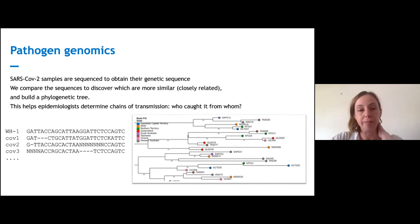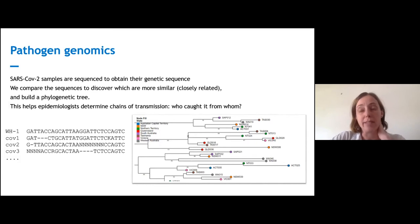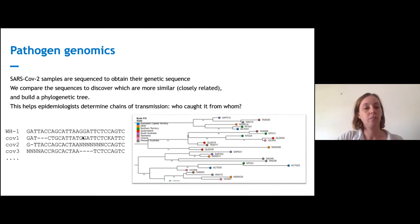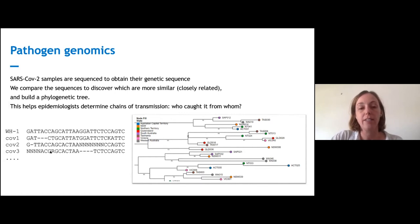So who caught it from whom? If a case suddenly pops up in Victoria and we don't know where it came from, is it really similar to some cases in New South Wales just across the border? Do we need to let people in New South Wales know that maybe there was a transmission chain they don't know about? You can't do this without data sharing across state boundaries. For SARS-CoV-2, there's actually very low genomic diversity and a lot of sequences, so we compare to the reference rather than doing full multiple sequence alignment, and that scales well given the large number of sequences.